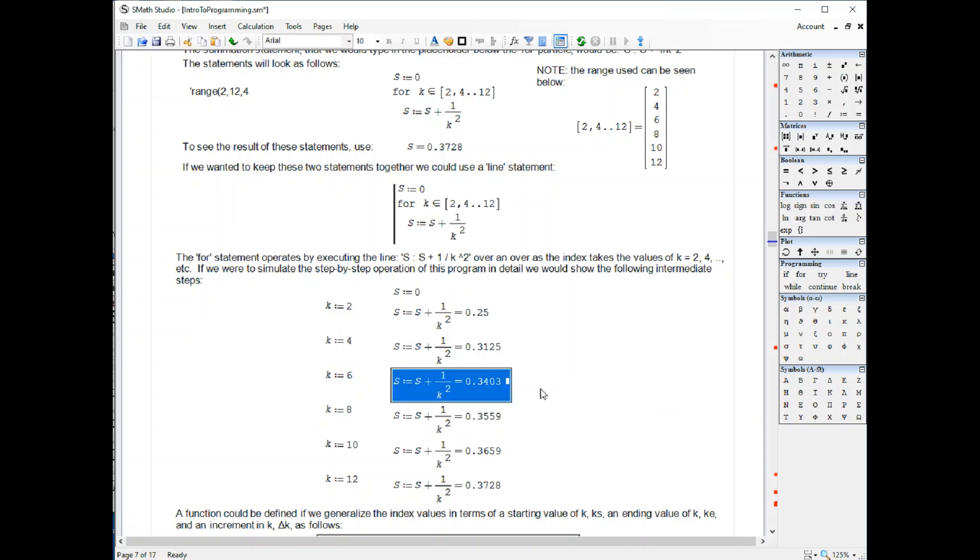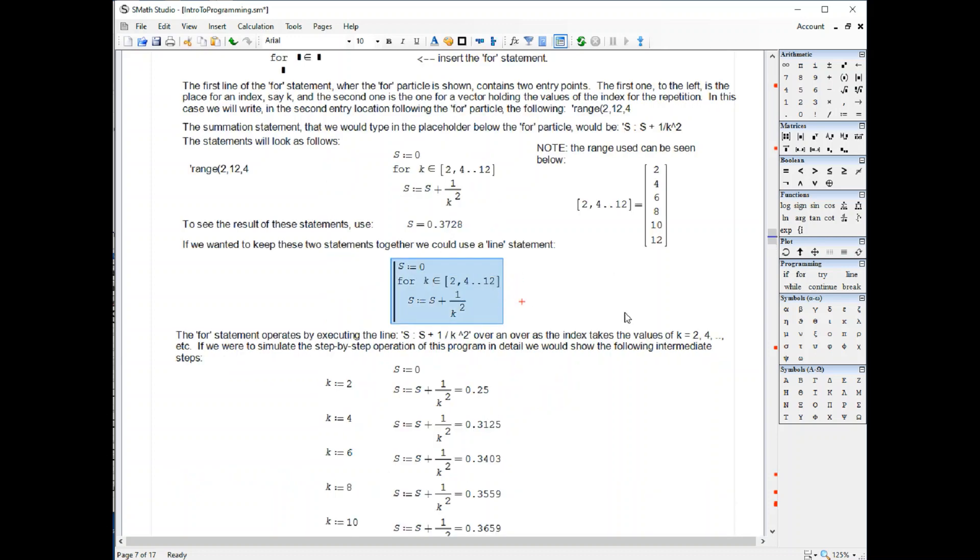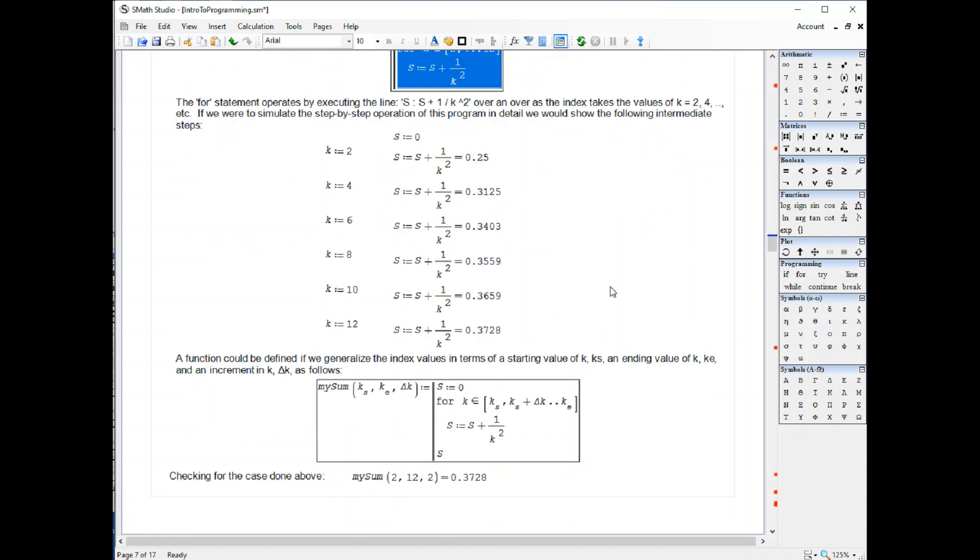Then k takes the value of 6, we add 1 over 6 squared, and we get 0.3403, and then we go 8, we do 10, and we do 12, and by the time we finish, we have s equal to 0.3728. That is what is summarized in this statement, including the for loop represented by this statement.